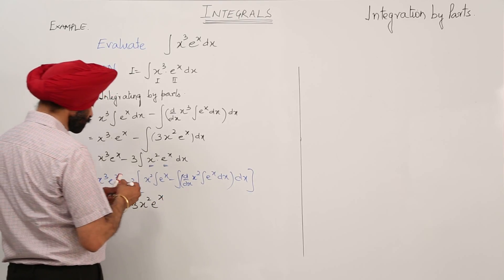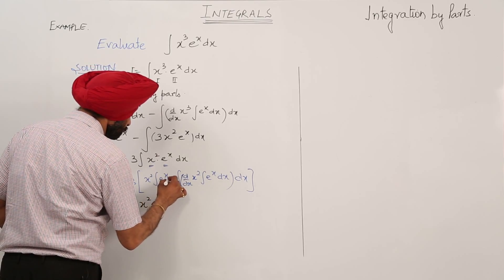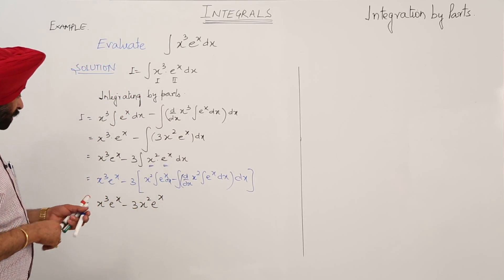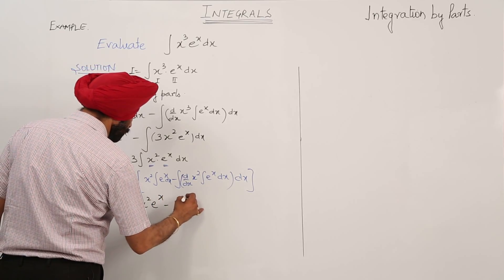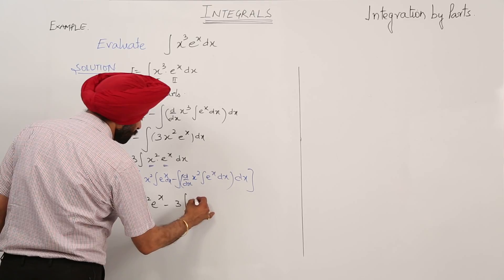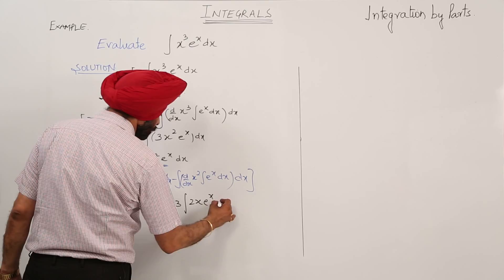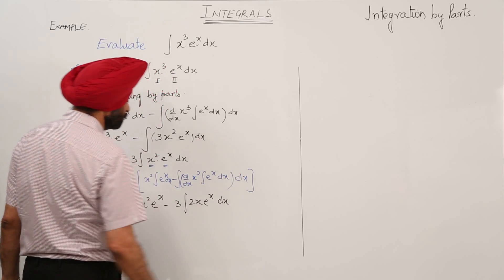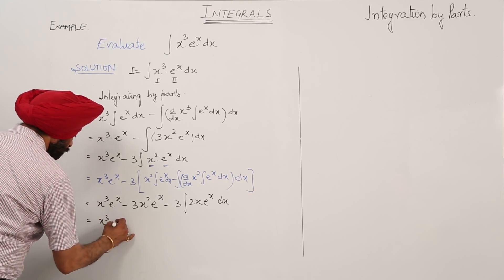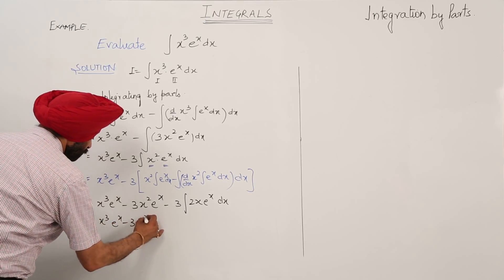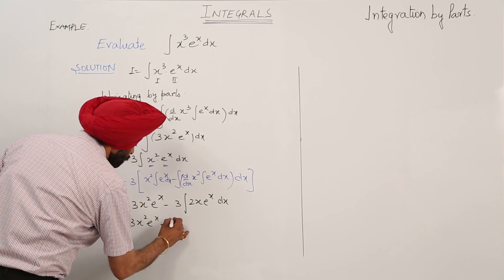Integration of e raise to power x dx is e raise to power x. Then d by dx of x square is 2x, and integration of e raise to power x is e raise to power x dx. So now we are having x cube e raise to power x minus 3x square e raise to power x minus 6 integration of x e raise to power x dx.